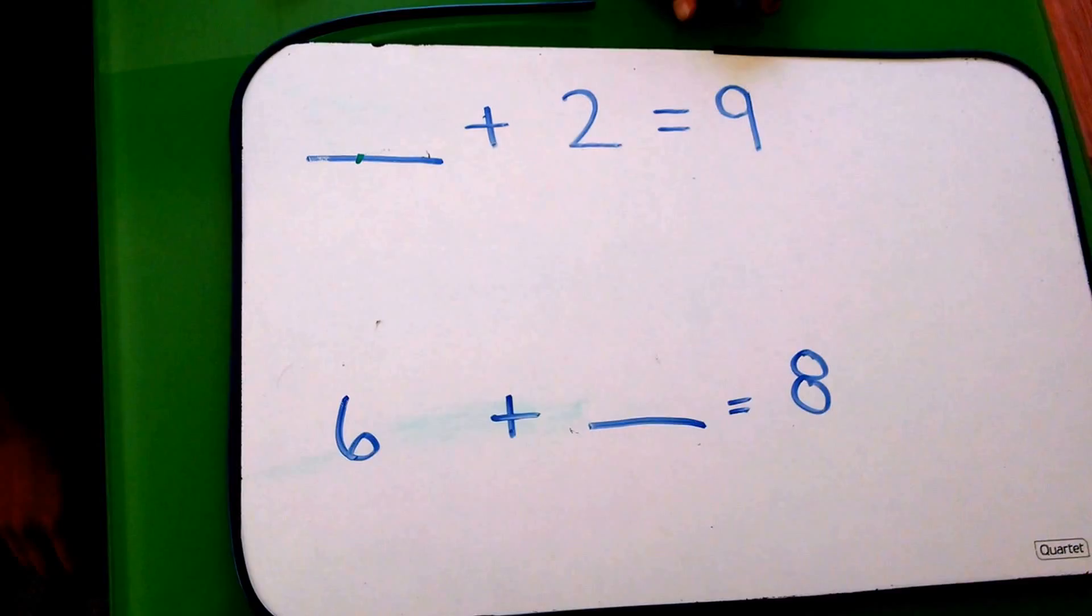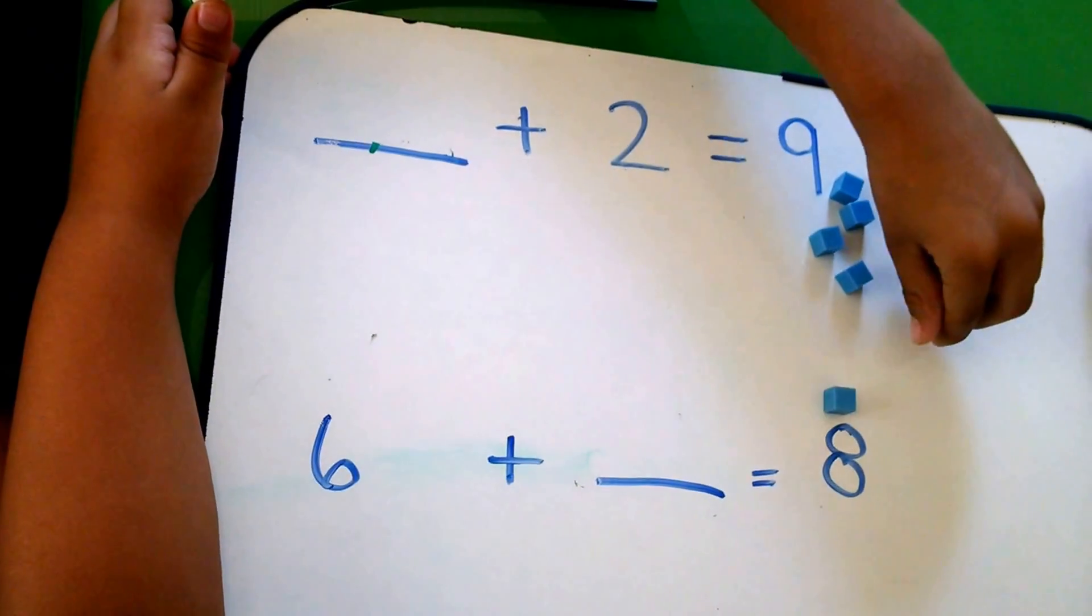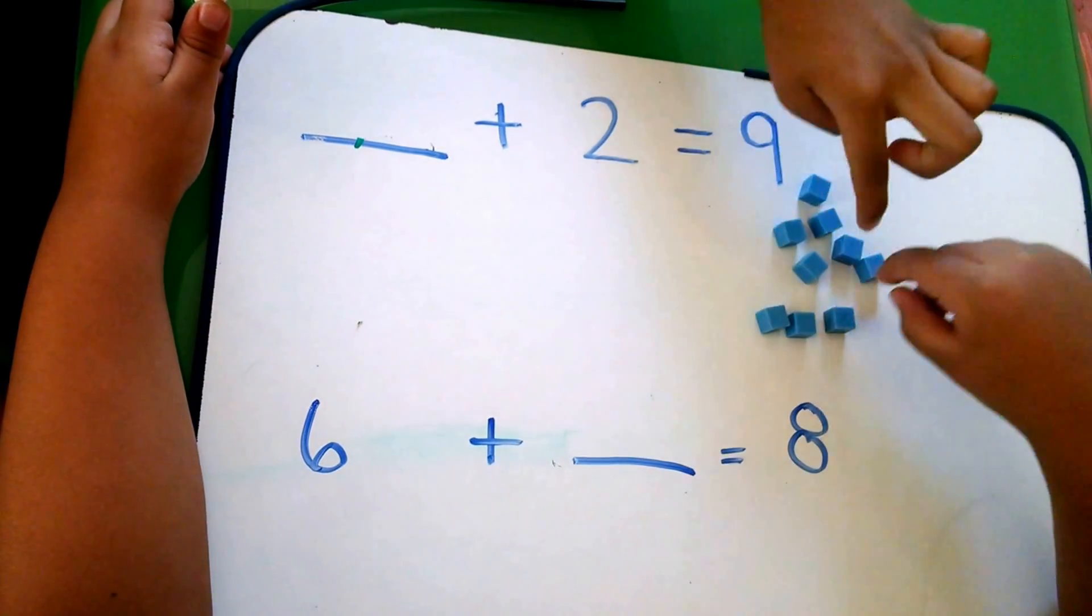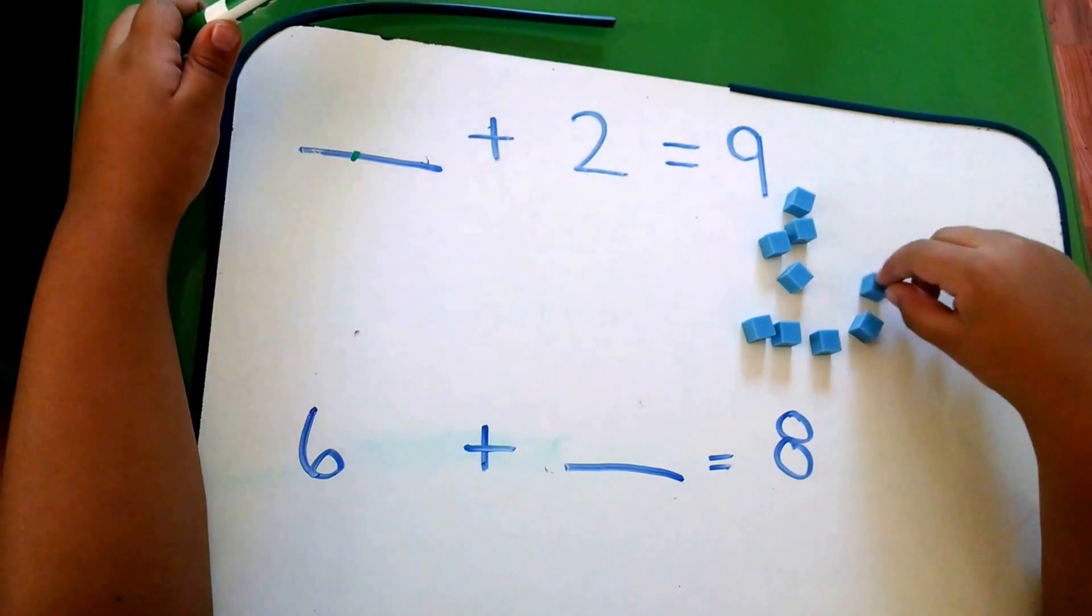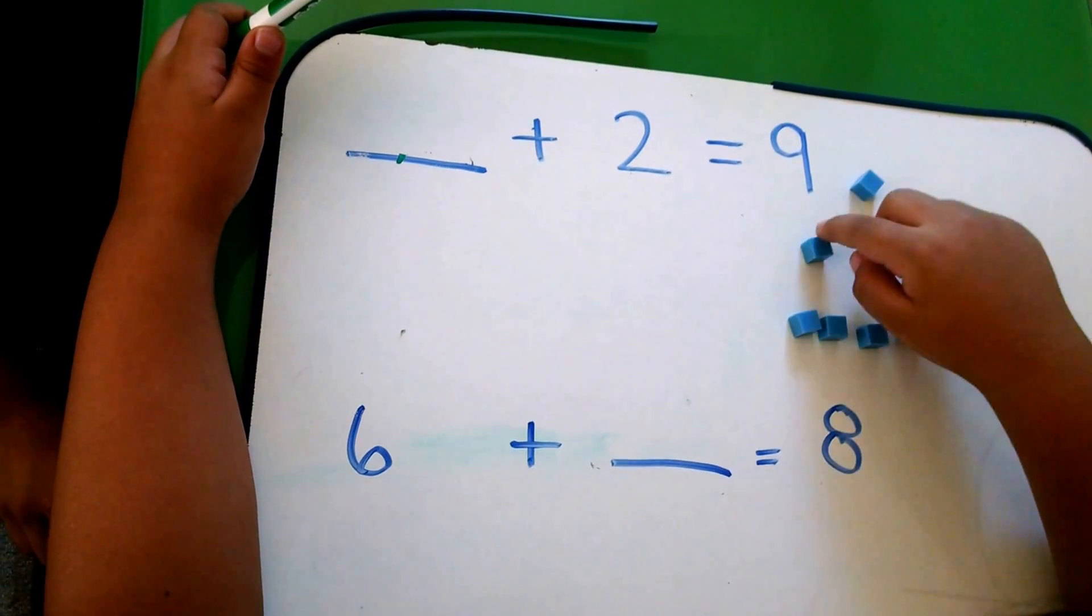So we're going to get nine blocks and put them in order, like a line. You can drag them there if you want.